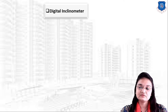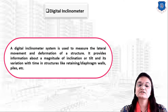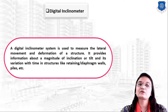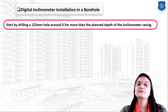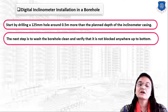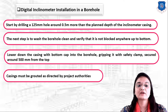The digital inclinometer system is used to measure lateral movement and deformation of structures, providing information about the magnitude of inclination or tilt and its variation with time in structures like retaining walls, diaphragm walls, piles, etc. For installation: start by drilling a 125 mm hole approximately 0.5 meters more than the planned depth of the inclinometer casing. Wash the borehole clean and verify it is not blocked. Lower the casing with the bottom cap into the borehole, gripping it with a safety clamp secured around 500 mm from the top.